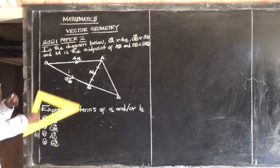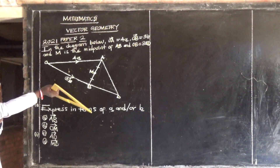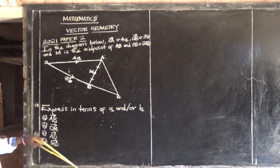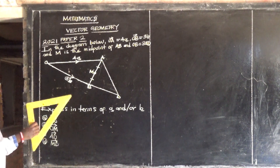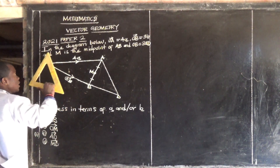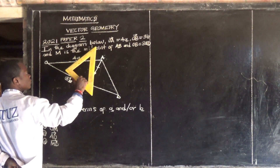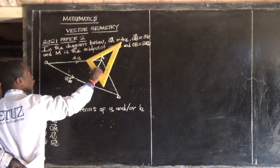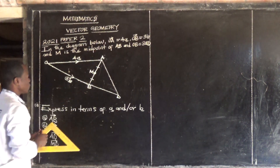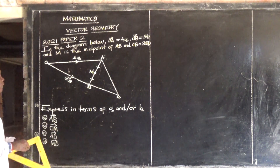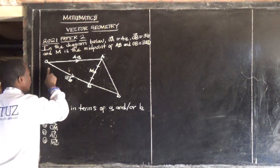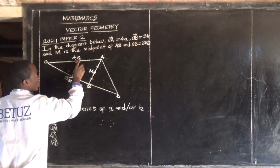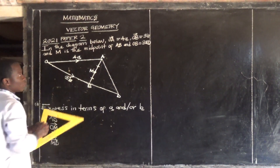2021 paper 2, a question on vectors. So it says in the diagram below, OA is equal to 4a. From O to A, this is 4a.